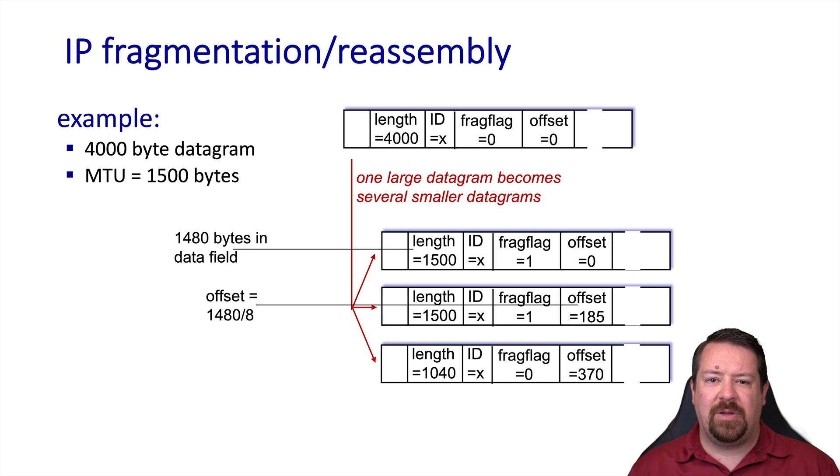To allow the field to be smaller the offset field is a multiple of eight bytes, so 185 times 8 gives us 1480, letting us know that the second fragment's first byte is offset 1480 bytes from the start of the original packet's payload. Likewise the third fragment's offset, 370 multiplied by 8, will give us the offset for its payload relative to the start of the original packet's payload.